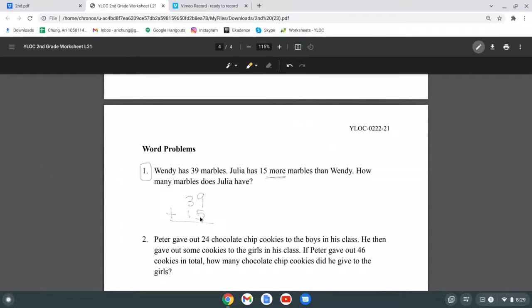So 39 plus 15, because Julia has 15 more marbles. Let's add: 9 plus 5 is 14. But we can also draw this out to check our work. 1, 2, 3, 4, 5, 6, 7, 8, 9. 9 plus 5. Now let's count: 1, 2, 3, 4, 5, 6, 7, 8, 9, 10, 11, 12, 13, 14. So it is 14. 3 plus 1 is 4, 4 plus 1 is 5. So how many marbles does Julia have?